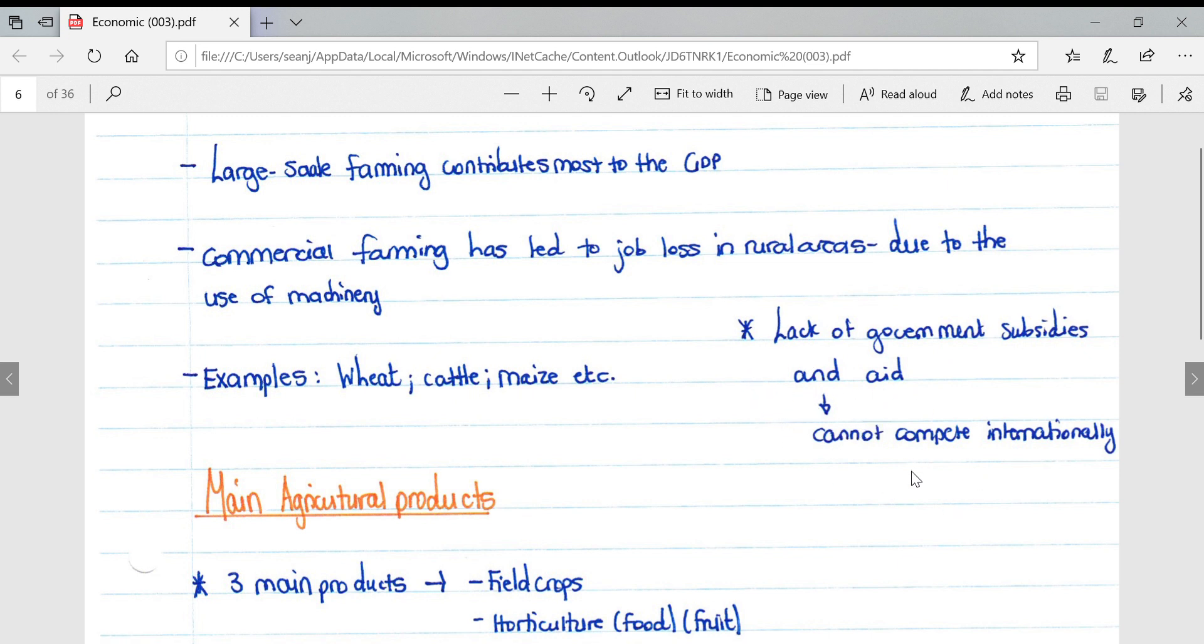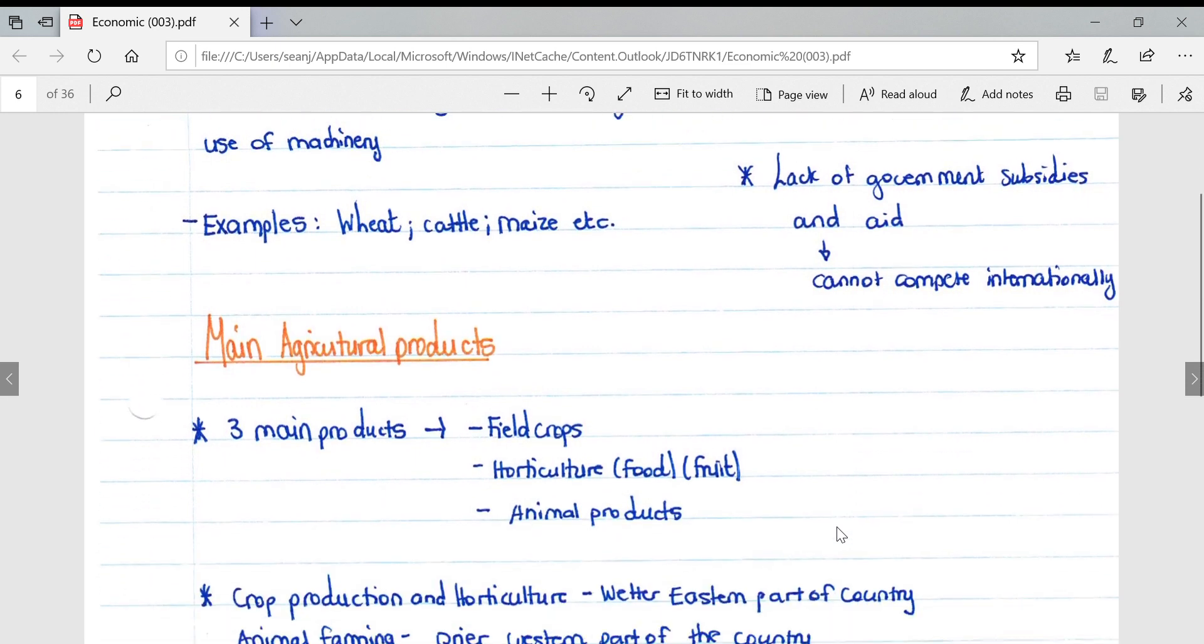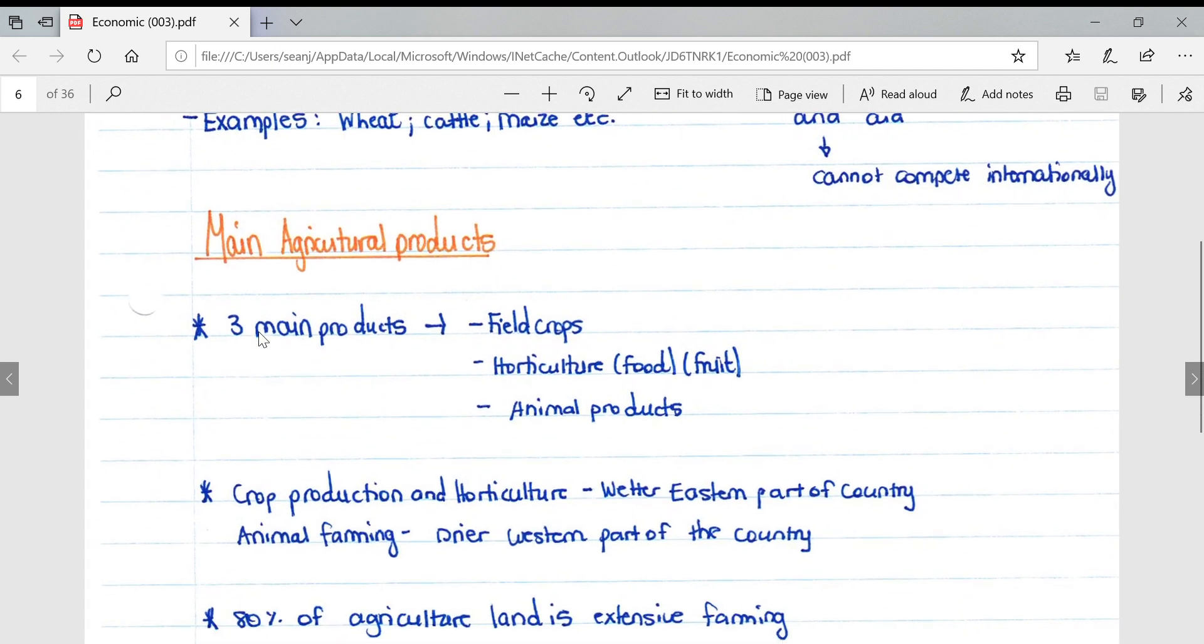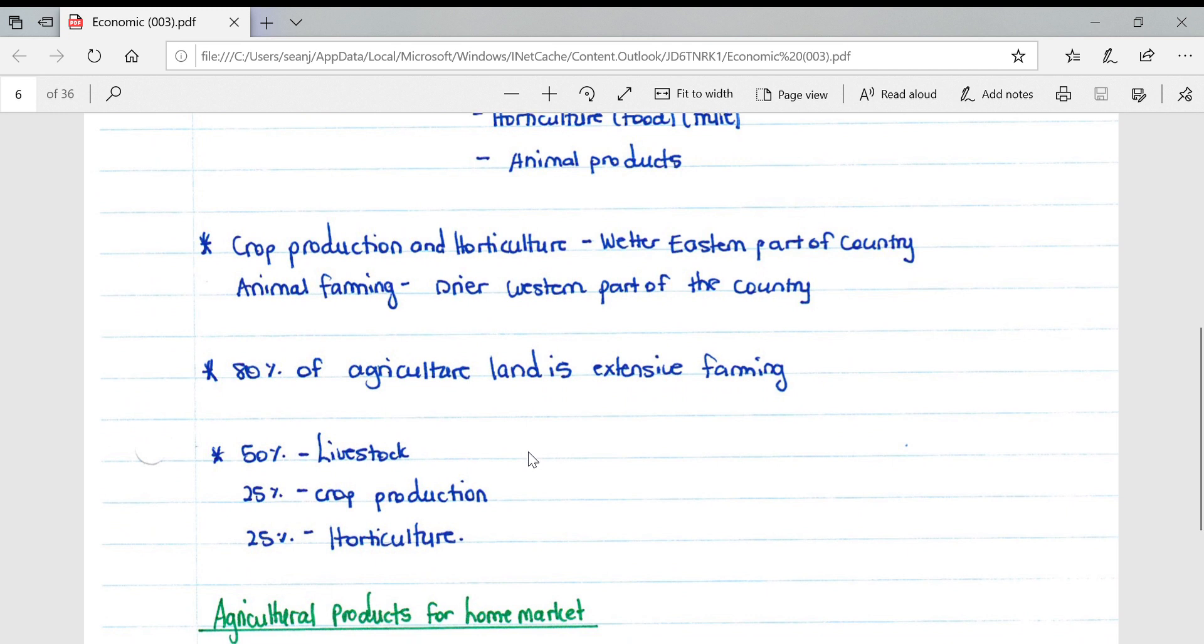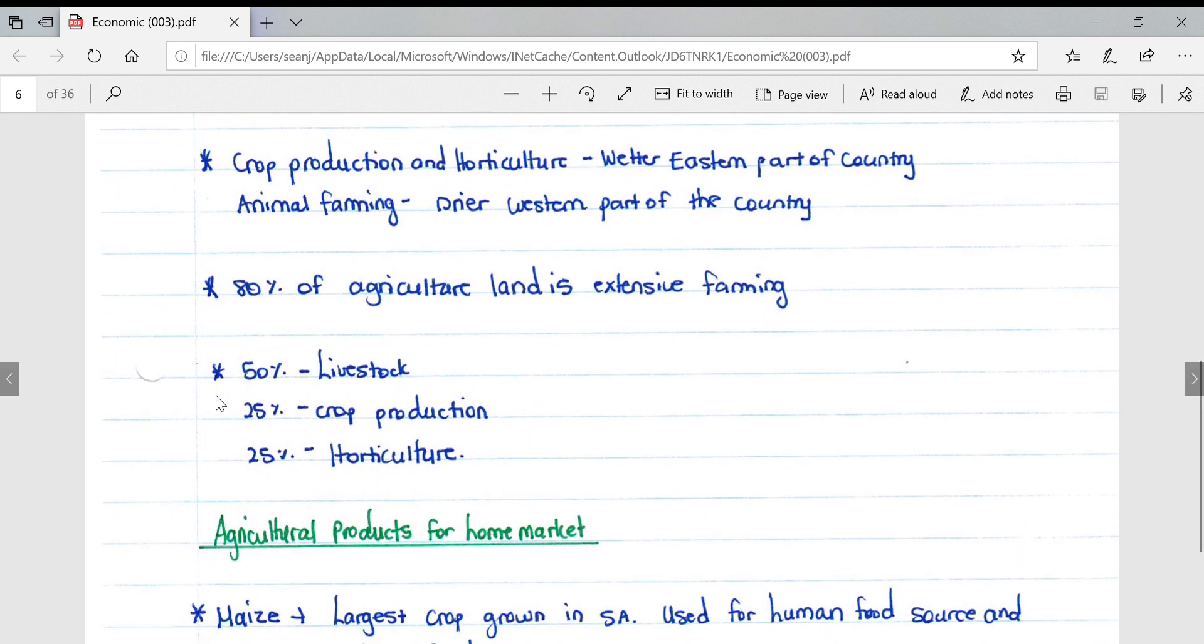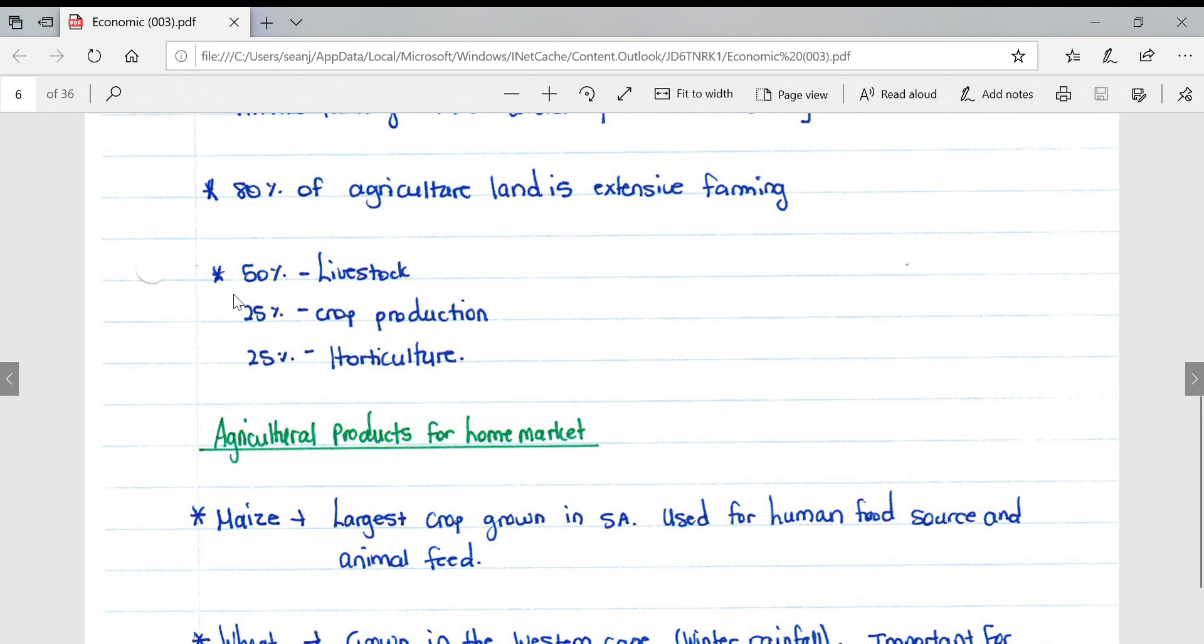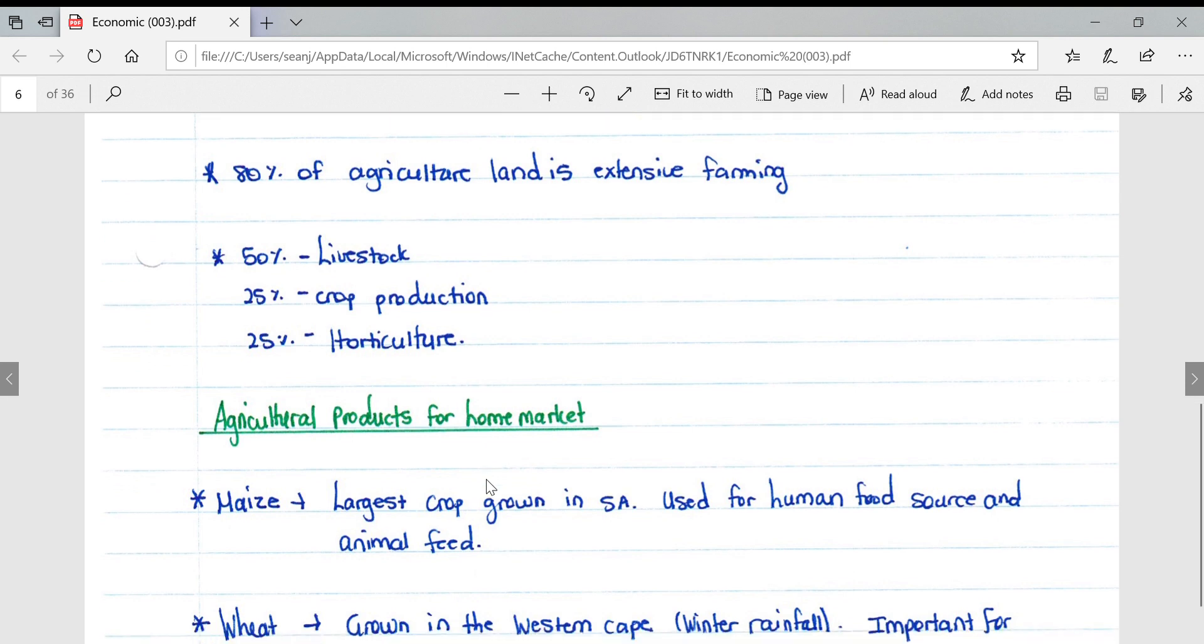Looking at main agricultural products, the three main products are field crops, horticulture such as food and fruit, and animal products. Crop production and horticulture occurs on the wetter eastern part of the country, whereas animal farming occurs on the drier western part. 80% of agricultural land is extensive farming: 50% is livestock, 25% crop production, and 25% horticulture. Livestock is the most popular and most farmed commodity.